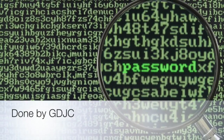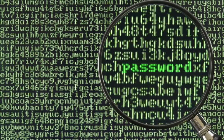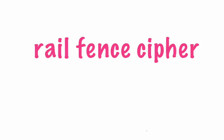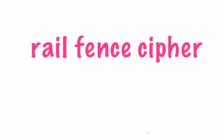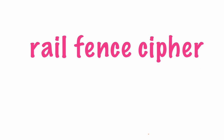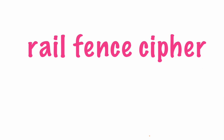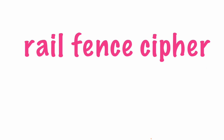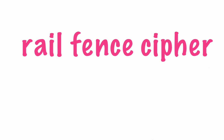Hello, we are GDJC and today we will be presenting to you the Rail Fence Cipher. Firstly, we will be talking about the background and context to the cipher. A Rail Fence Cipher is a type of transposition cipher that rearranges the order of the letters in the message in a quick and convenient way.